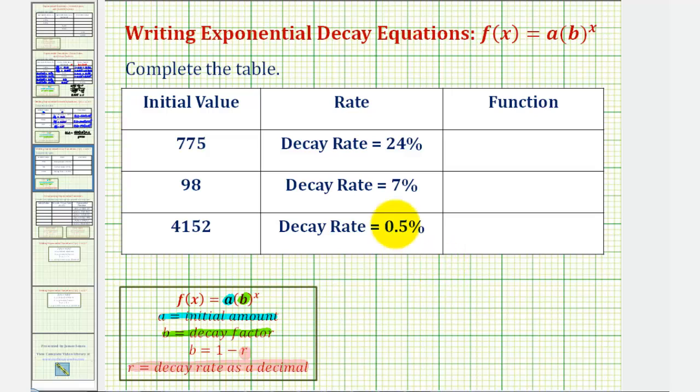Looking at the provided information, notice how the first column gives us the initial value, which would be a in the exponential function. But notice how the next column is a decay rate expressed as a percentage, where we need the decay rate r as a decimal.